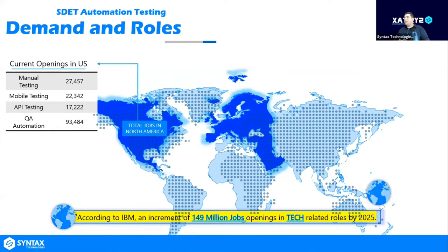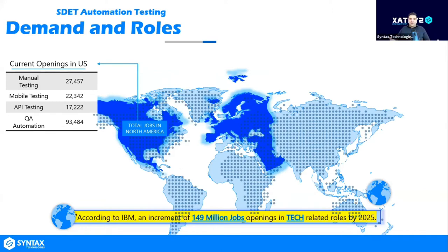According to IBM, about 149 million jobs are being created worldwide by 2025. More companies are switching toward going online. No matter which part of the world you're in, there are going to be jobs. We currently have students from Ukraine, Russia, and different regions getting interviews from different countries, because everything is now remote — from the comfort of home.